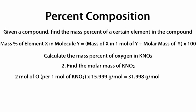Step 2: find the molar mass of KNO₂. We do this by dissecting KNO₂ into K, N, and O and multiplying each element's atomic mass by the respective amounts in the molecule. Doing that, we find KNO₂ has a molar mass of 85.103 grams per mole.